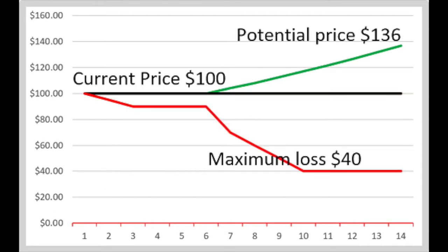A negative asymmetrical risk-reward situation is one where you can lose more than the potential positive reward. In this case, an investment of $100 has a maximum loss of $60 but a potential increase of only $46. You want to be invested in the first case — where the loss is minimum and the upside is maximum.